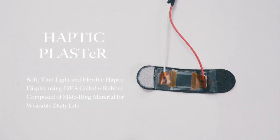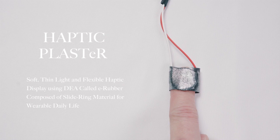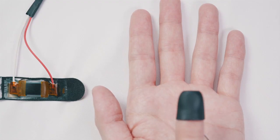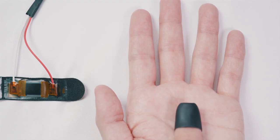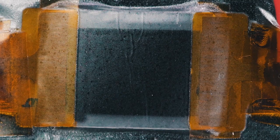In this research, we present Haptic Plaster, which is a soft, thin, light, and flexible haptic display. Haptic Plaster uses the Dielectric Elastomer Actuator, DEA, called E-Rubber, which is composed of slide ring polymer material, SRM.